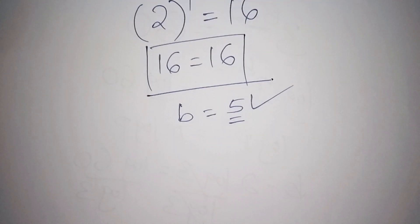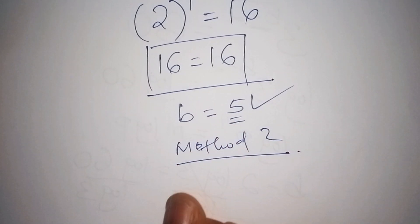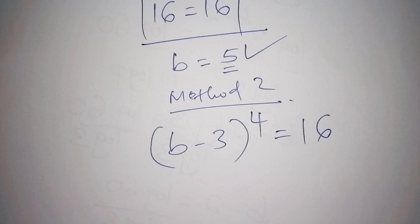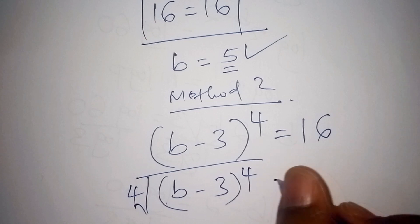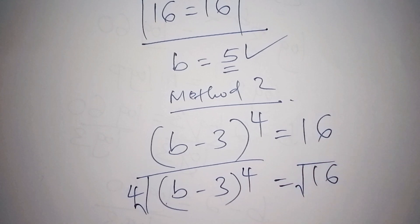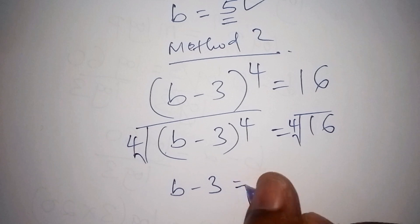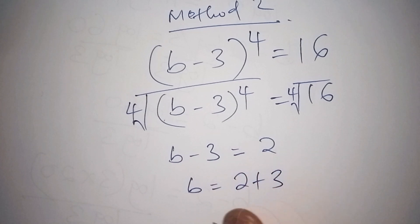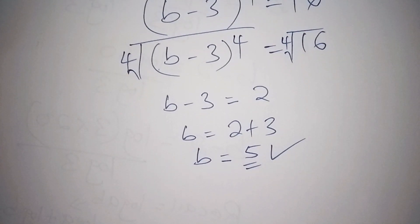Alternatively, this is Method 2. The math problem is B minus 3, to the power of 4, equals 16. In this method we find the fourth root of both sides. So we take the fourth root of B minus 3 to the power of 4, and the fourth root of 16. This gives us B minus 3 equals 2, since the fourth root of 16 is 2. Therefore B equals 2 plus 3, and our value for B still remains 5.